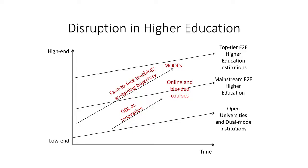50 years ago, ODL was a disruptive innovation. Clayton Christensen defines disruptive innovation in business as a process whereby a smaller entity with fewer resources is able to successfully challenge established players and displace big businesses by addressing a specific need that had hitherto not been addressed. If we use Christensen's disruptive innovation model in higher education, we find that open and distance learning was the innovation that challenged mainstream face-to-face higher education and catered to marginalised and unreached constituencies.